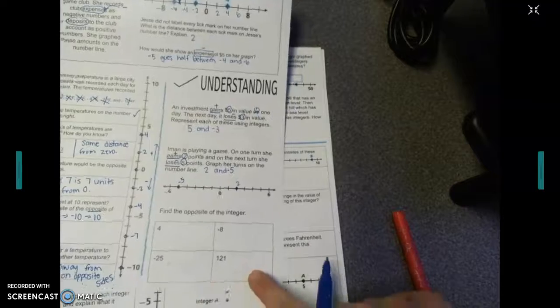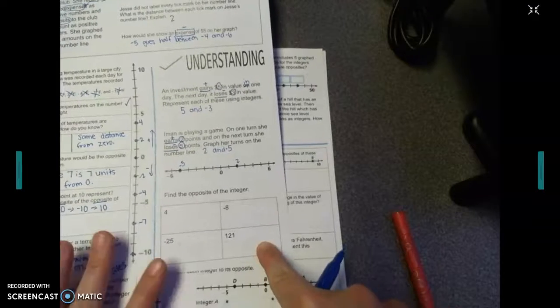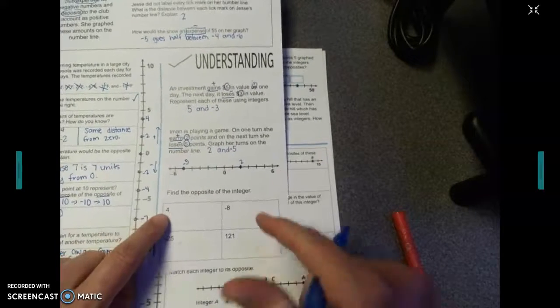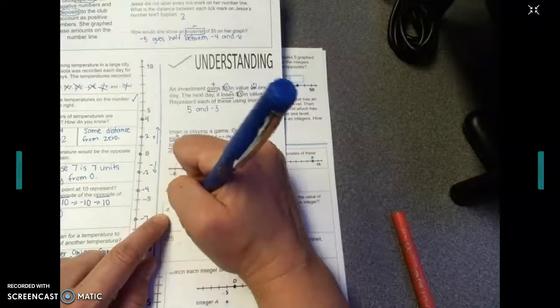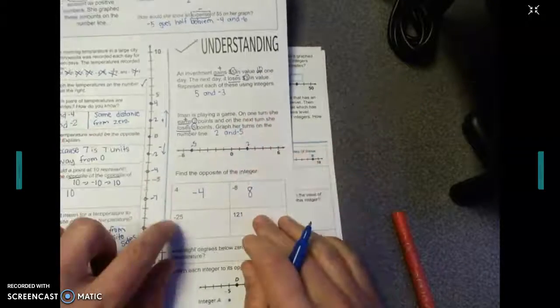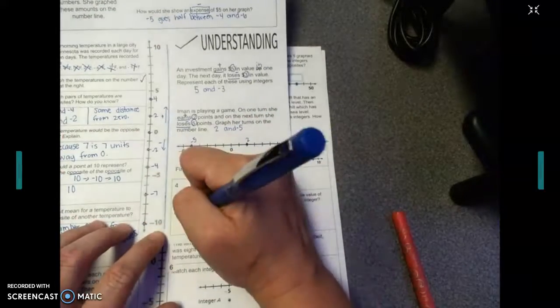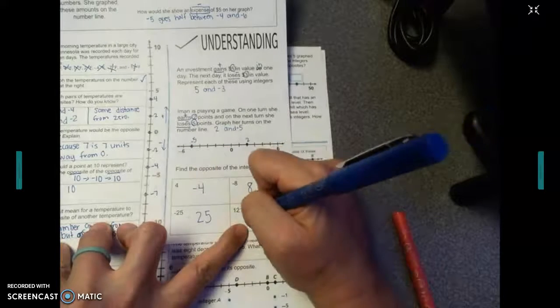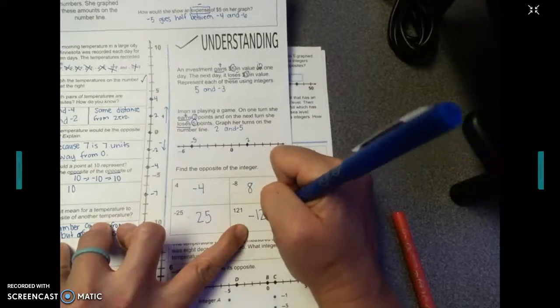Your favorite part was probably right down here at the bottom. Find the opposite of the integer. The opposite of 4 is negative 4. The opposite of negative 8 is 8. The opposite of negative 25 is 25. And the opposite of 121 is negative 121. That's all there is to check understanding.